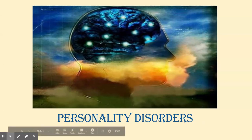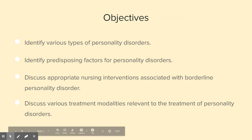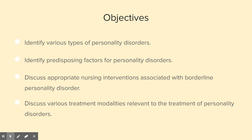We are back to talk about the personality disorders. This is an interesting unit of content because you might find traits of people you know in some of these categories. Our objectives are to identify various types of personality disorders, identify some of the predisposing factors for personality disorders — although we have to be careful with that because some of them have very complicated causes — and we'll discuss appropriate nursing interventions associated with borderline personality disorder and various treatment modalities relevant to personality disorders.